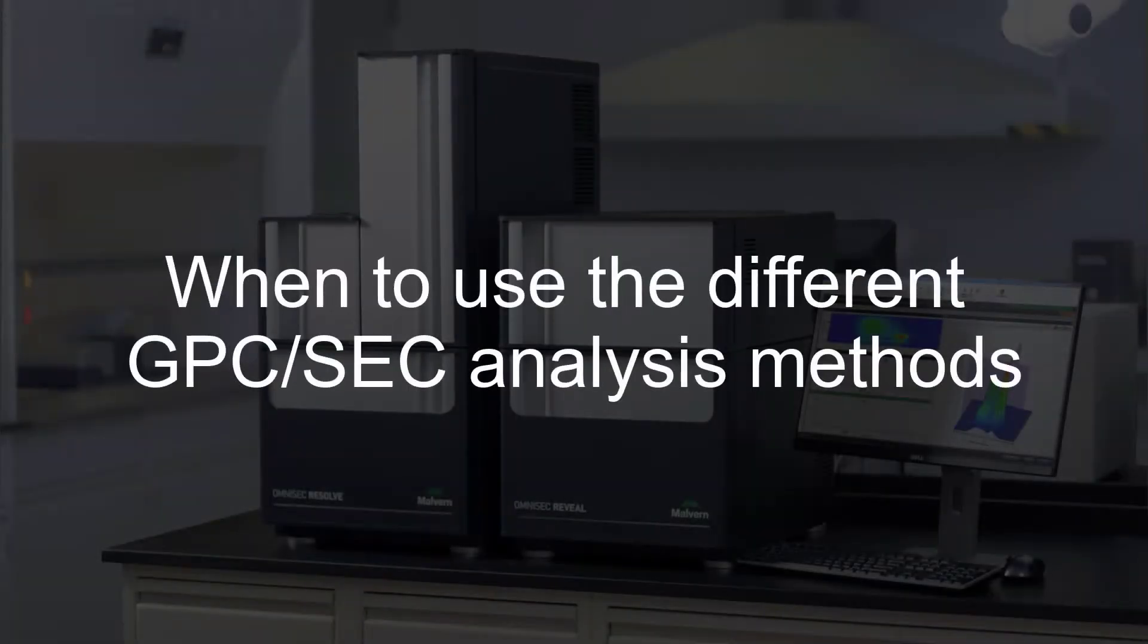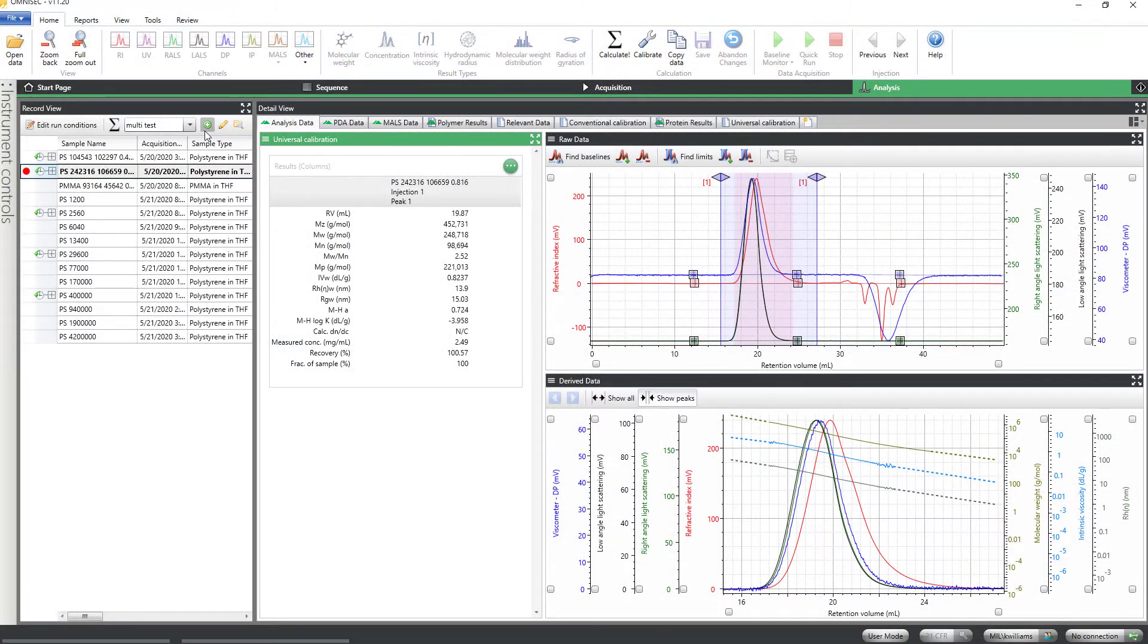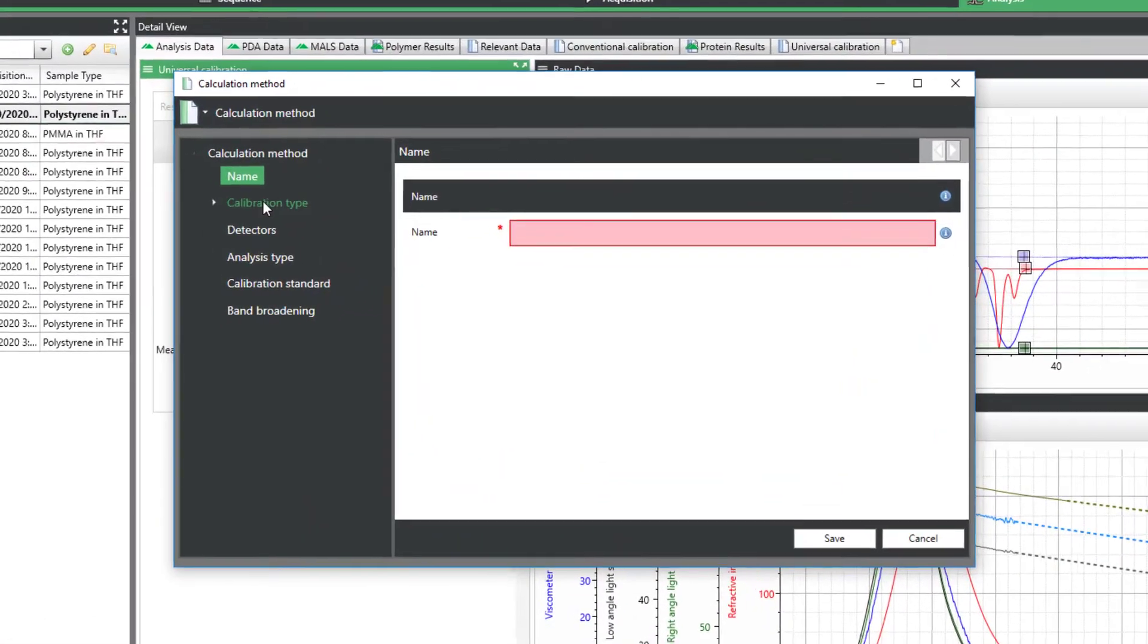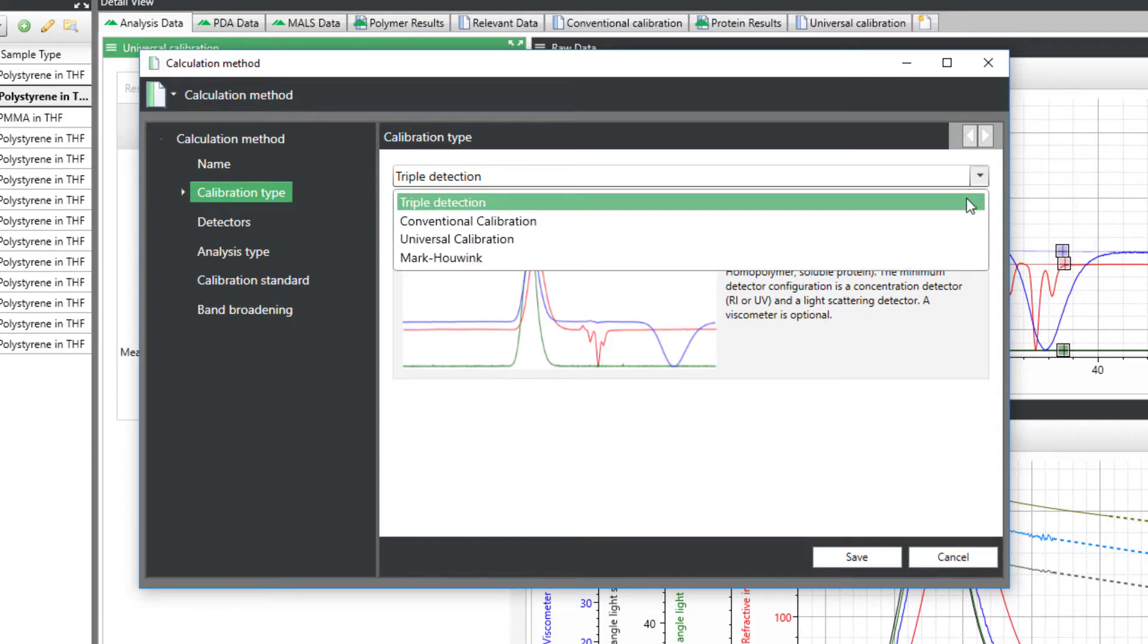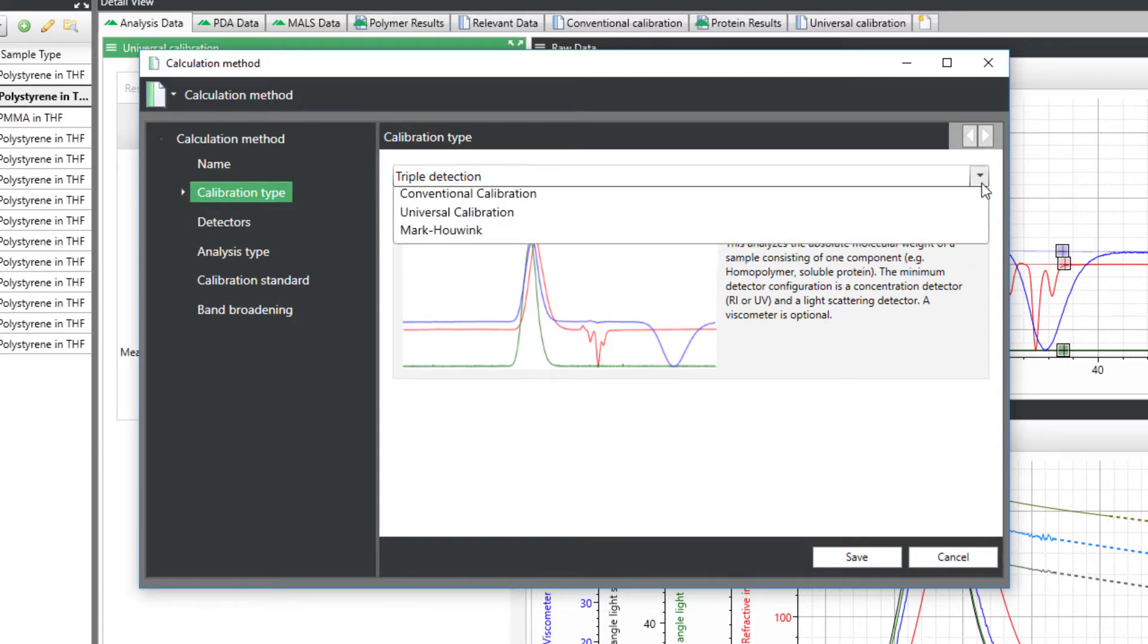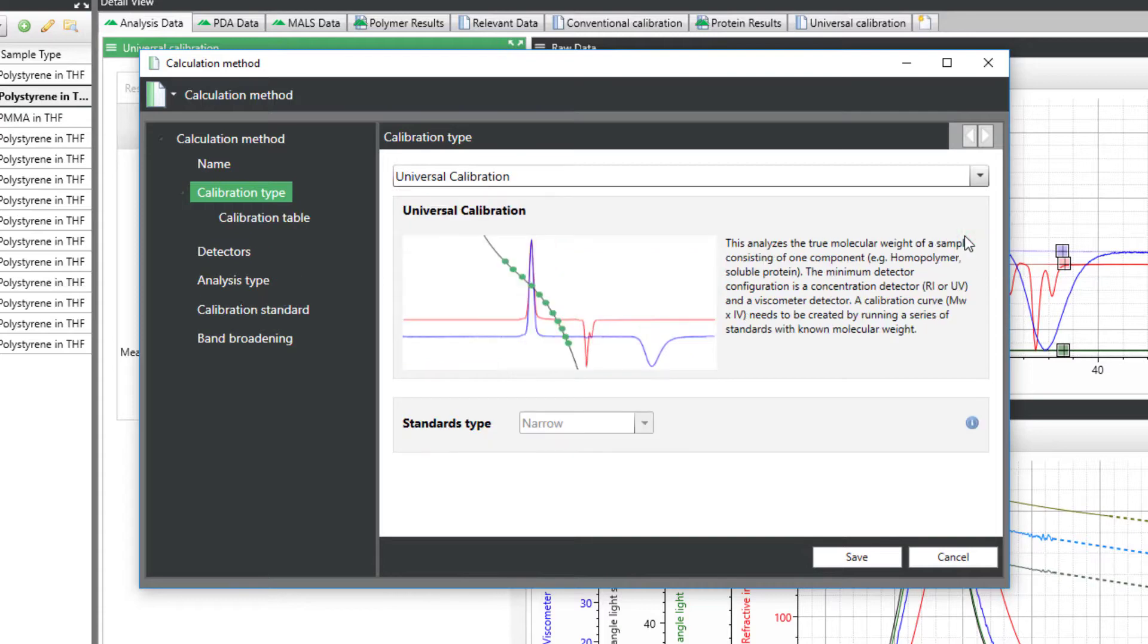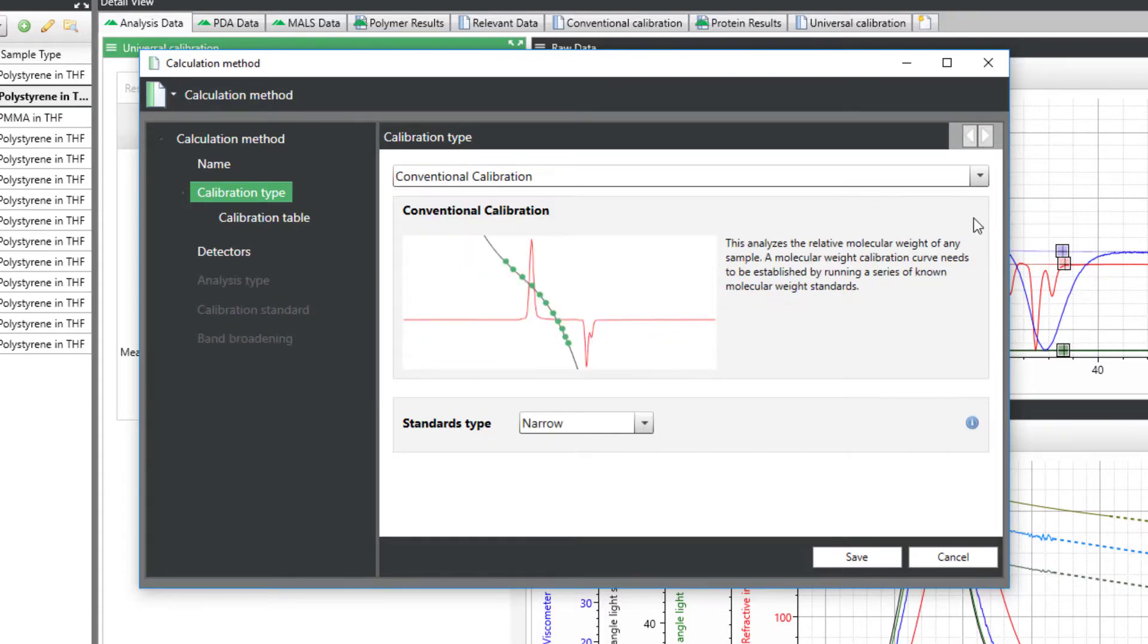When to use the different GPC/SEC analysis methods. The Omnisec software offers a variety of analysis methods or calibration types to help you get the most out of your data. These options include advanced detection or triple detection, which indicates the use of a light scattering detector, and the column calibration options Universal Calibration and Conventional Calibration.